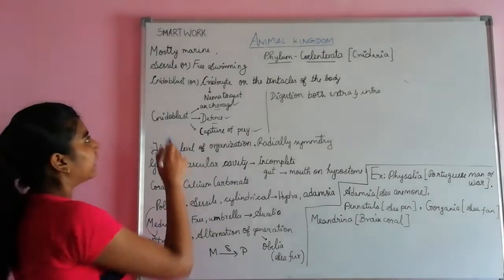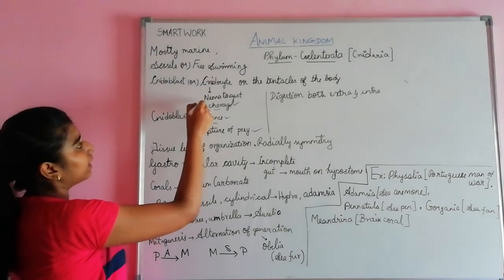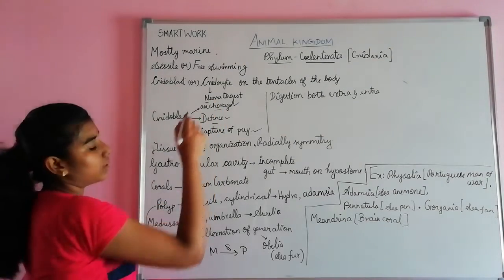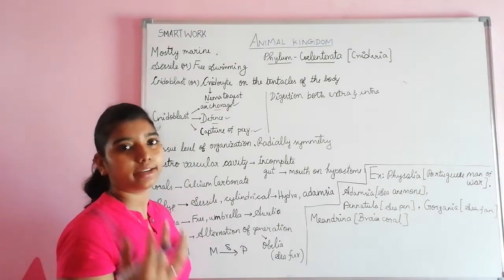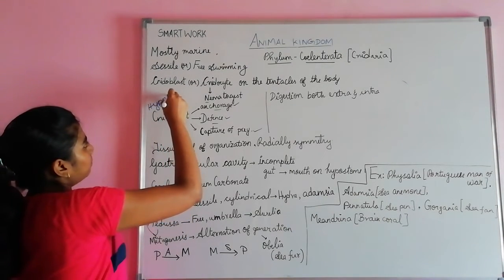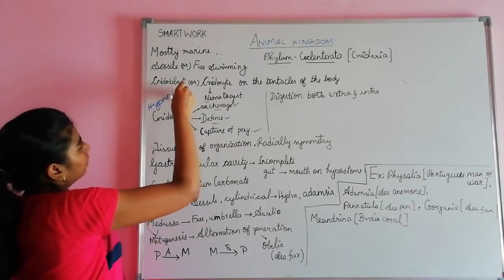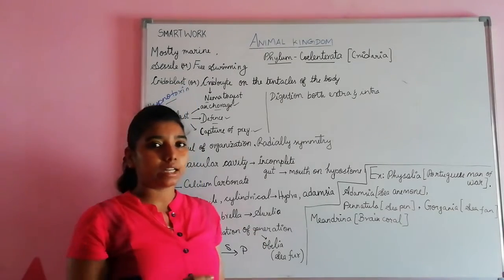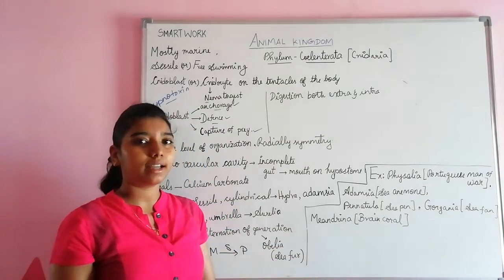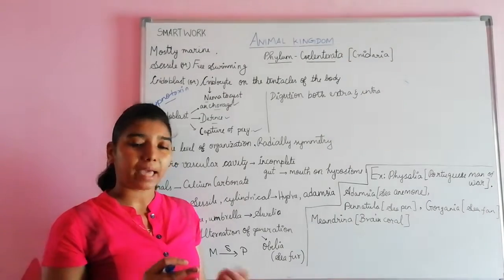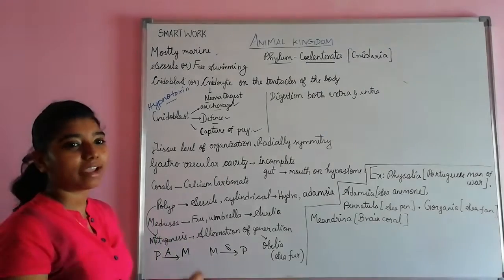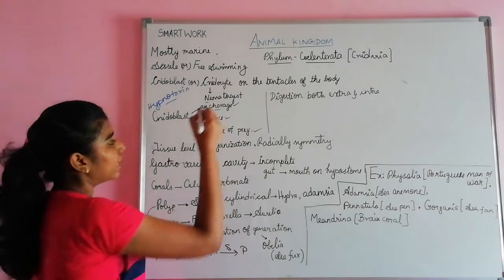The cnidoblast contains a capsule called the nematocyst, which is filled with a poison toxin called hypnotoxin. Whenever their enemies come closer, they eject this poison so that the enemies die or get paralyzed. In this way they protect themselves — that is called defense.